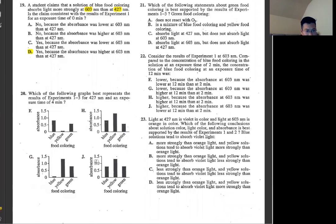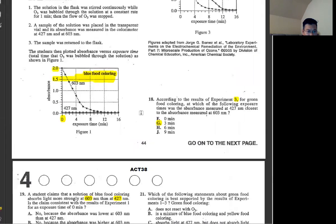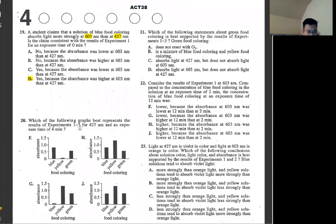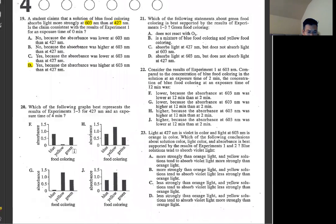Number 20, which of the following graphs best represents the results of experiments 1 through 3 for 427 and exposure time 4 minutes? At 427, blue at 4 minutes is 0.05. Really, really small timing. Just check the blue one. As soon as you see blue, you don't need to check yellow or green. It's so obvious. If you want to check, it's going to be G.